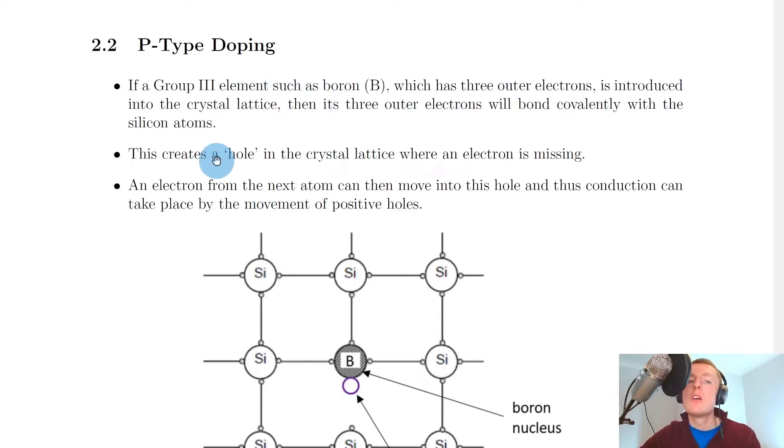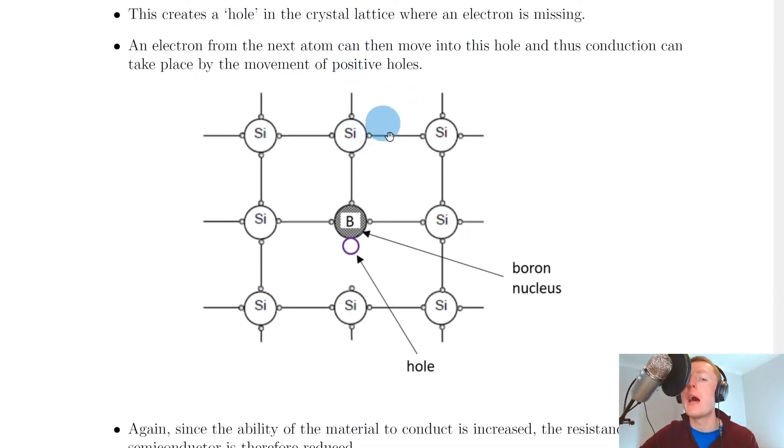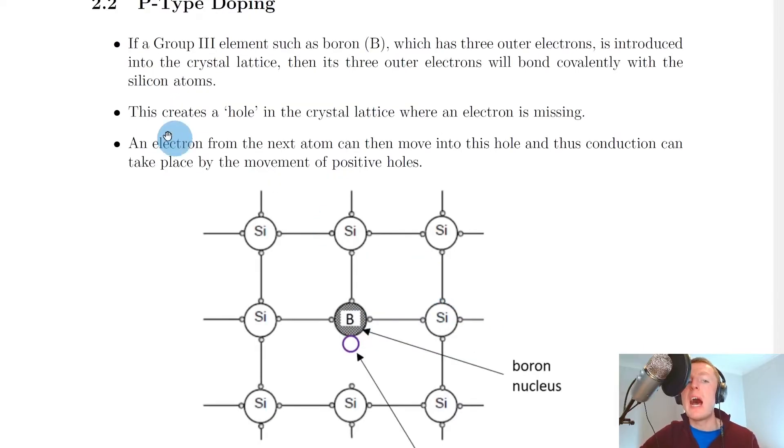For p-type doping, if a group 3 element such as boron, which has three outer electrons, is introduced into the crystal lattice, then its three outer electrons will bond covalently with the silicon atoms. Remember, the silicon atoms have four outer electrons or valence electrons. We've actually introduced a boron nucleus which only has three outer electrons, and this creates a hole in the crystal lattice where an electron is missing.